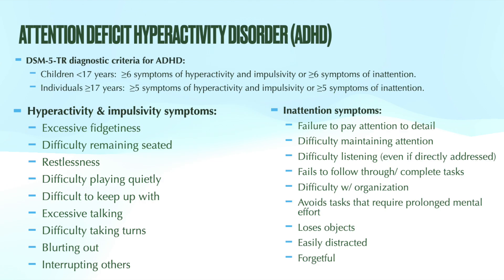The DSM provides diagnostic criteria for ADHD. For children less than 17 years of age, they need to have six or more symptoms of hyperactivity and impulsivity, or six or more symptoms of inattention. For individuals 17 years and older, they need five or more symptoms of hyperactivity and impulsivity, or five or more symptoms of inattention. You can see the full symptom lists on the slide, with the age-based thresholds of six or more for under 17, and five or more for 17 and older.